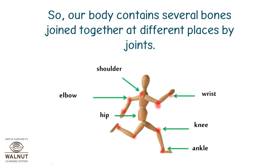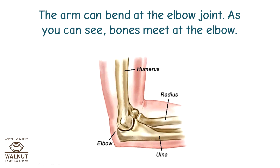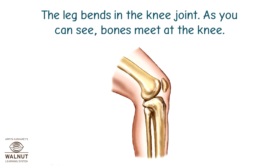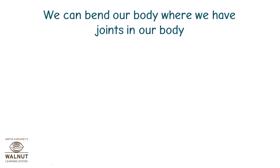Our body contains several bones joined together at different places by joints. We can bend or rotate our body parts only at those joints, and different joints allow movement in different ways. The arm can bend at the elbow joint — as you can see, bones meet at the elbow, and there are joints at other places in the arm too. Similarly, the leg bends at the knee joint — bones meet at the knee, and there are joints at other places in the leg too. We can bend our body wherever we have joints.